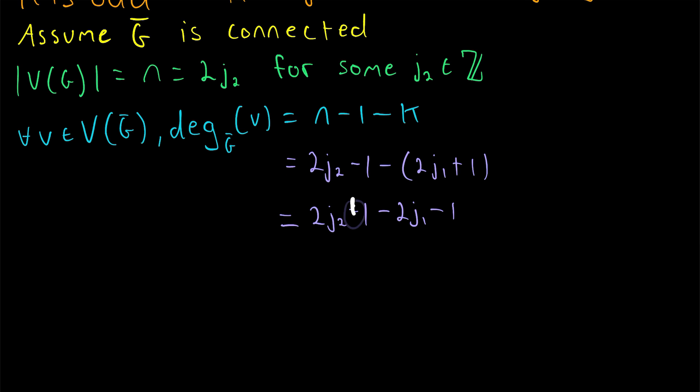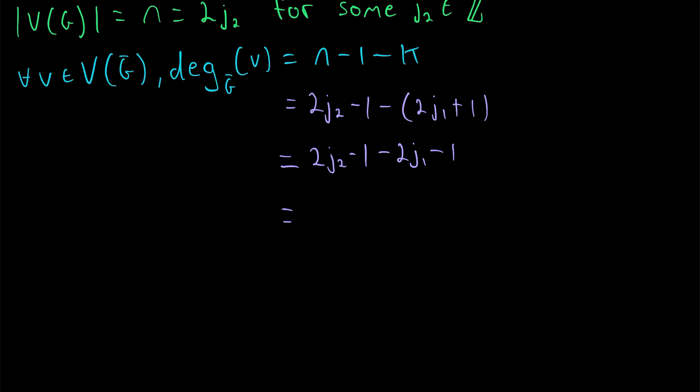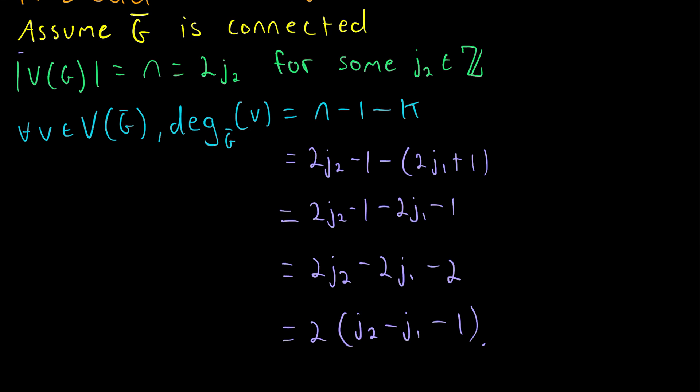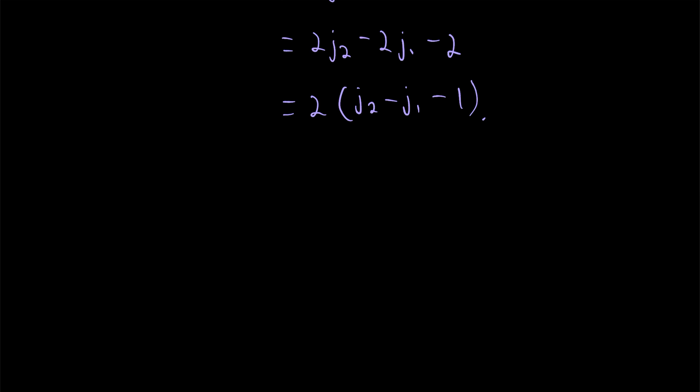And I'm going to rewrite that sort of curvy subtraction sign. It wasn't supposed to be so curvy. Then it's pretty much a wrap from here. We can rewrite this as 2J2 minus 2J1 minus 2, combining the two negative 1 terms. And then we just factor out a 2. This is equal to 2 multiplied by J2 minus J1 minus 1. Thus, we've shown that every vertex in G complement has an even degree. Thus, since one of our original assumptions was that G complement is connected, and again we just showed that every vertex of G complement has an even degree, we have our desired conclusion. G complement must be Eulerian. And that, my friends, is the proof.